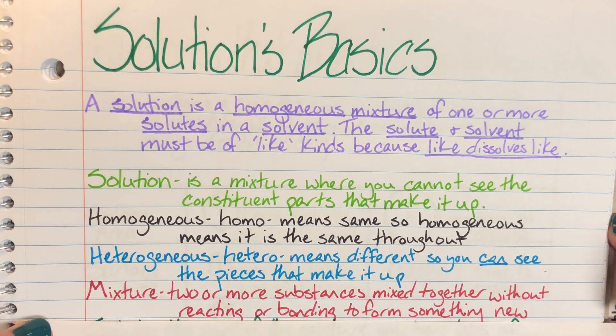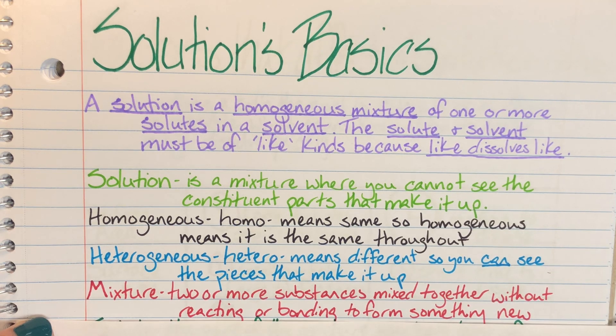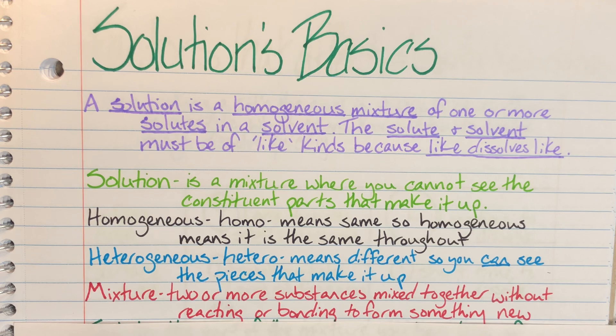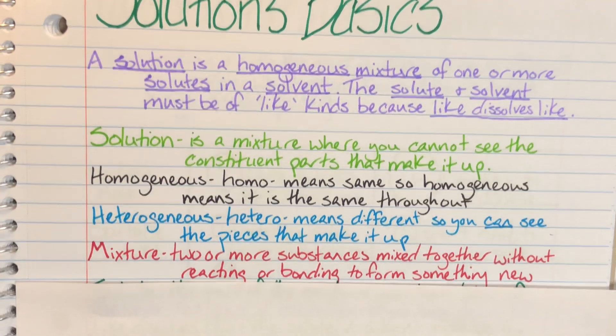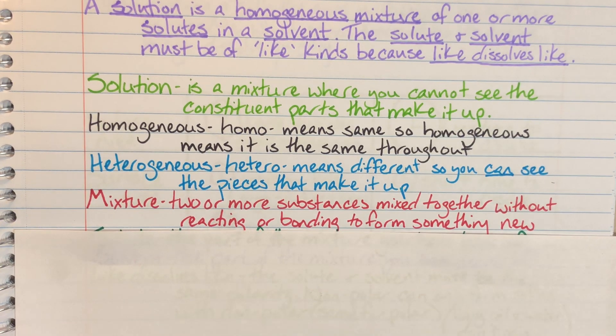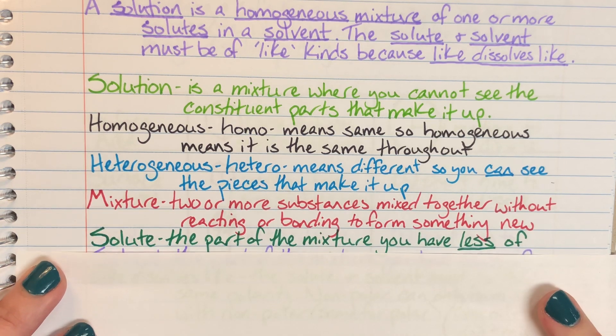Next we are going to discuss that other word that I kept saying, which was mixture. A mixture is going to be two or more substances that are mixed together without reacting or bonding to form something new. So even though I have combined a couple of things or more, they have not fundamentally changed what they are, and they maintain their own identity.